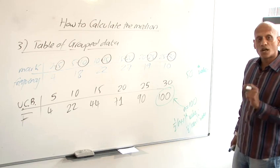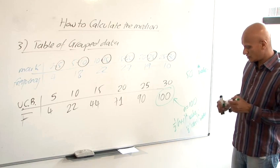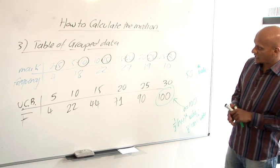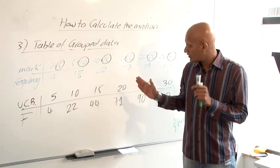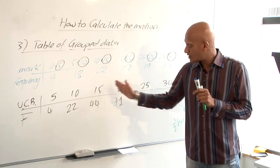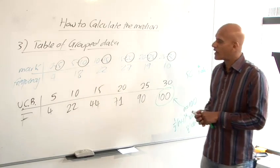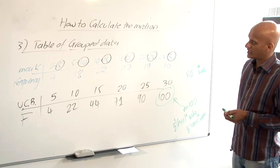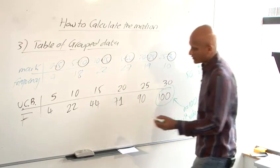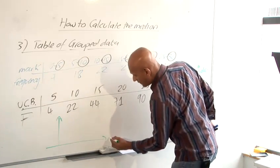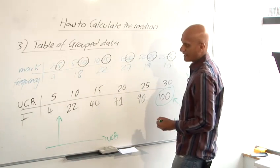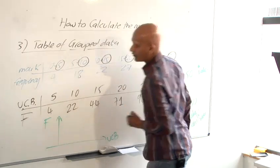Now to find the 50th value, we don't use the same method as we used for our table of ungrouped data. We don't just look for 50 in the table and then read up. We actually want to find out what the number is in between these. So to do that, we have to draw a cumulative frequency curve. So to draw a cumulative frequency curve, we're going to have the upper class boundary here and our frequencies here.